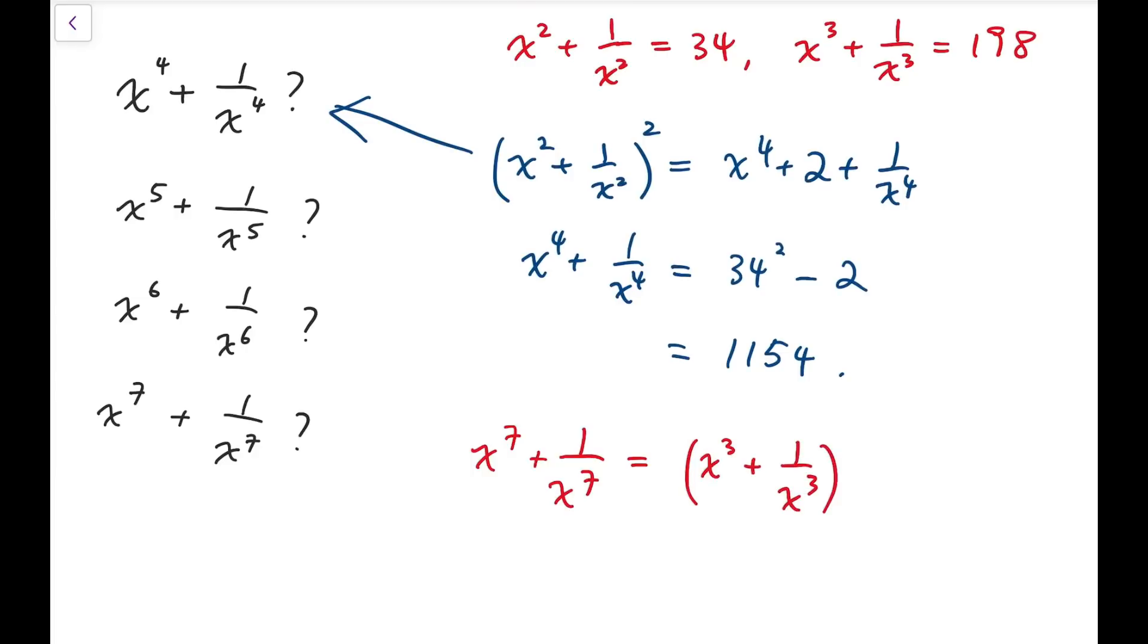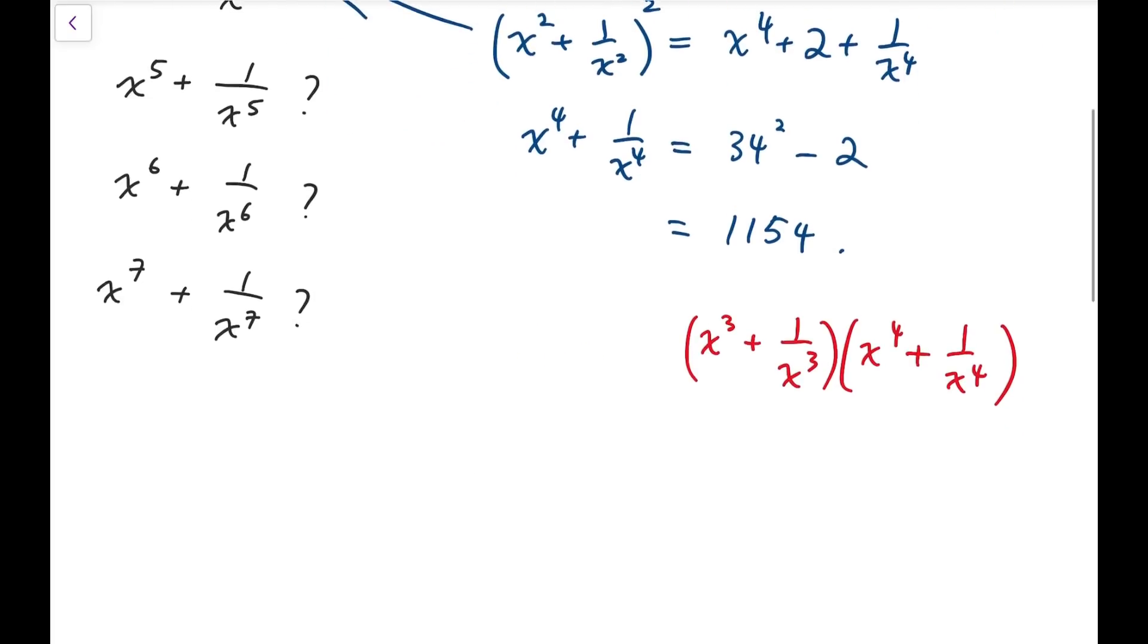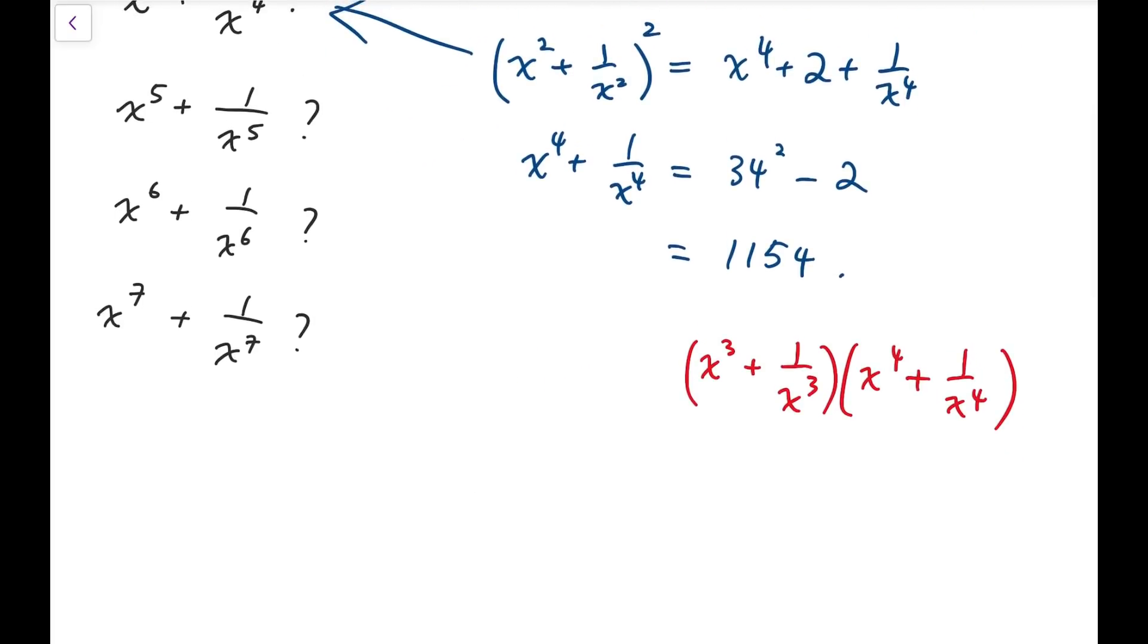x cubed plus 1 over x cubed and x to the 4 plus 1 over x to the 4. Of course they are not equal. Actually I should say that this product is equal to